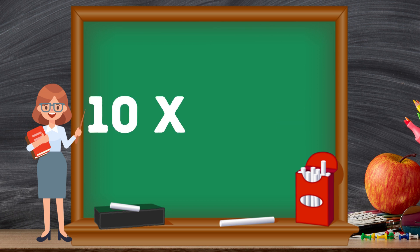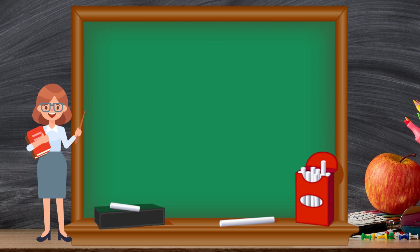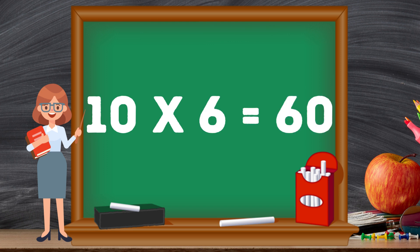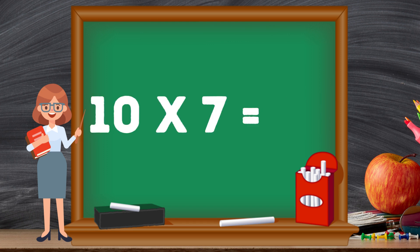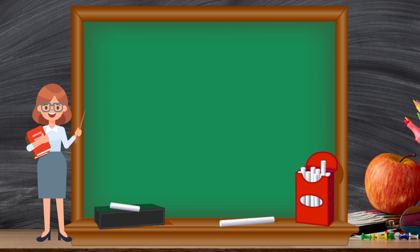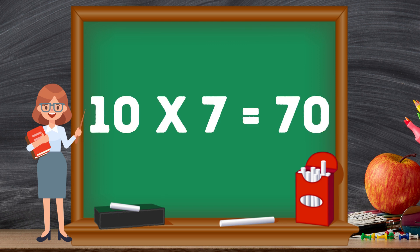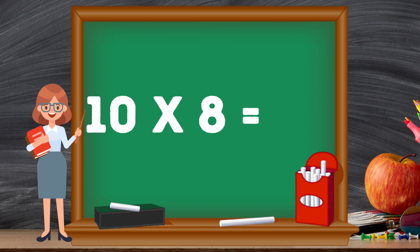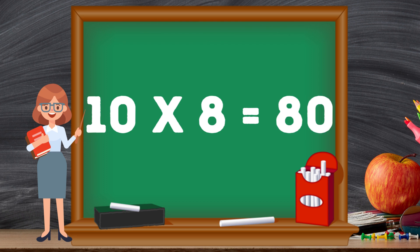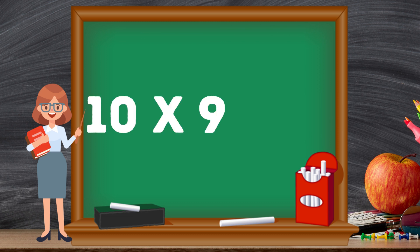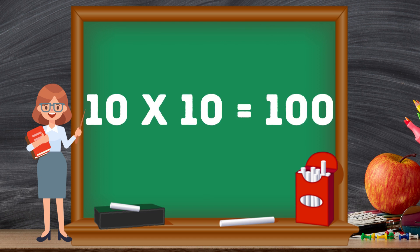Ten fives are fifty. Ten sixes are sixty. Ten sevens are seventy. Ten eights are eighty. Ten nines are ninety. Ten tens are hundred.